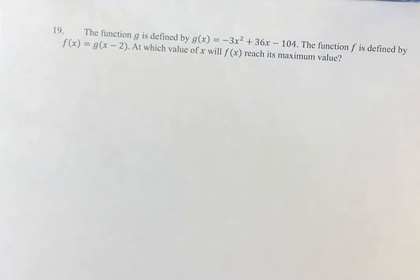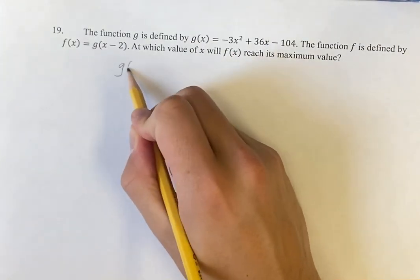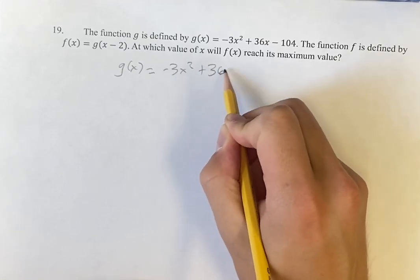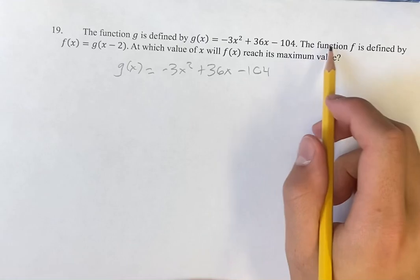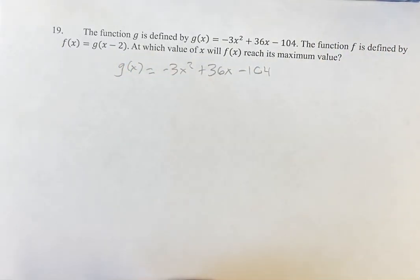Hello and welcome back to another video. In this problem, we're given the function g as g(x) equals negative 3x squared plus 36x minus 104. Now, we're given the function f as defined by f(x) equals g(x minus 2).